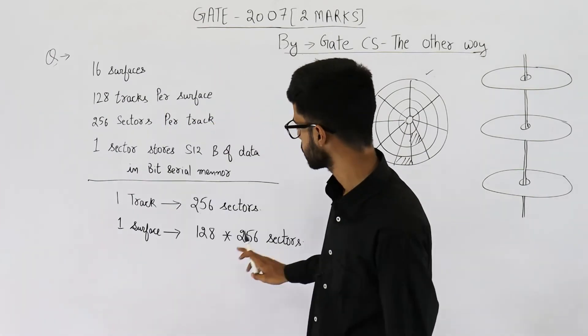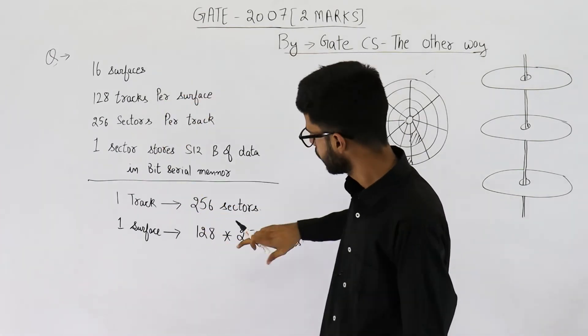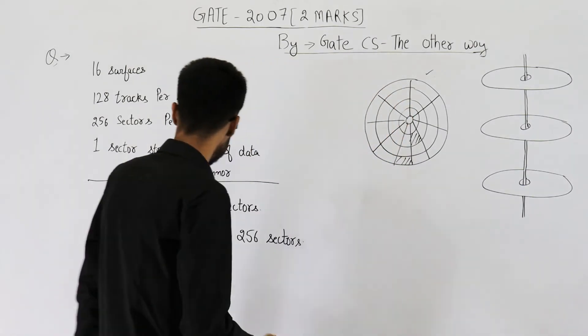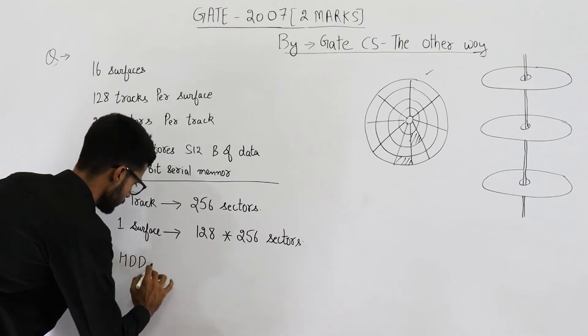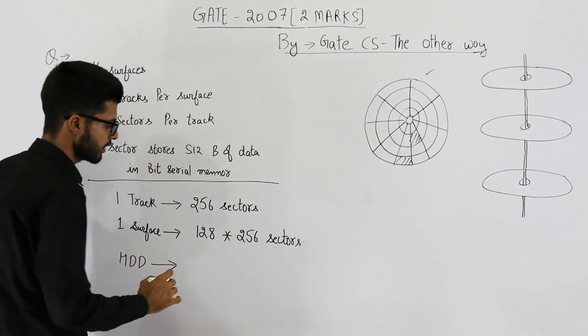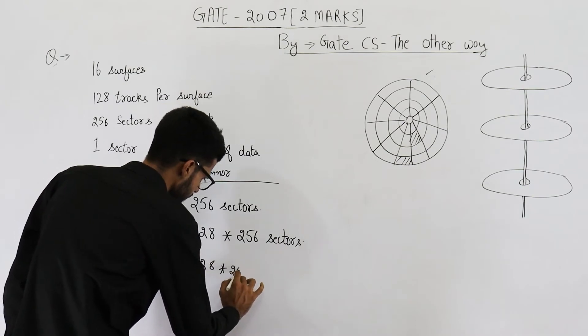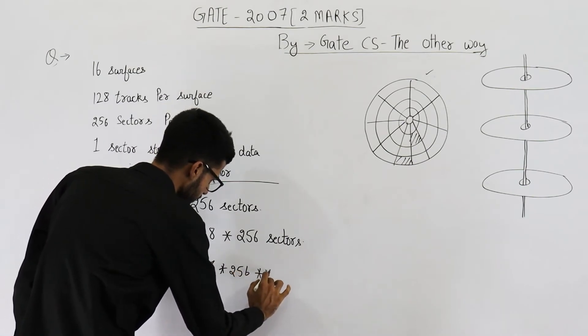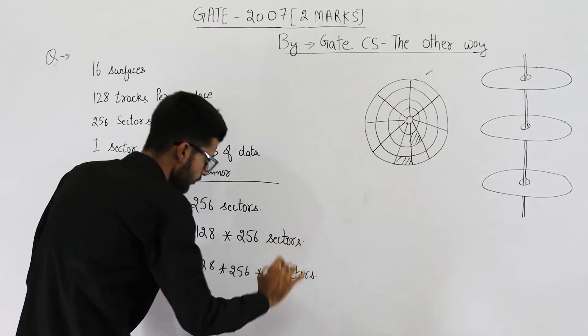If one surface has these many sectors, how many sectors will 16 surfaces have? This number multiplied by 16. So the hard disk drive, the entire disk drive, will have 128 into 256 into 16 sectors.